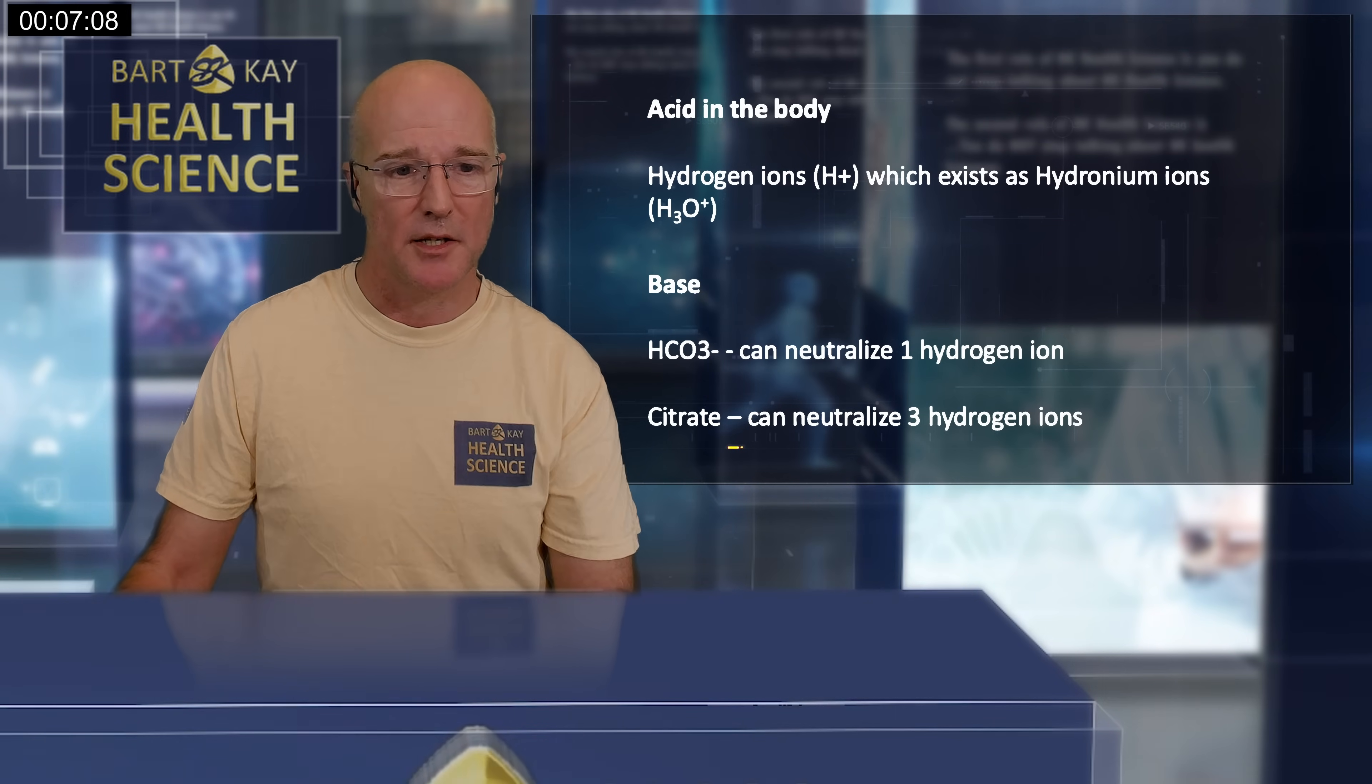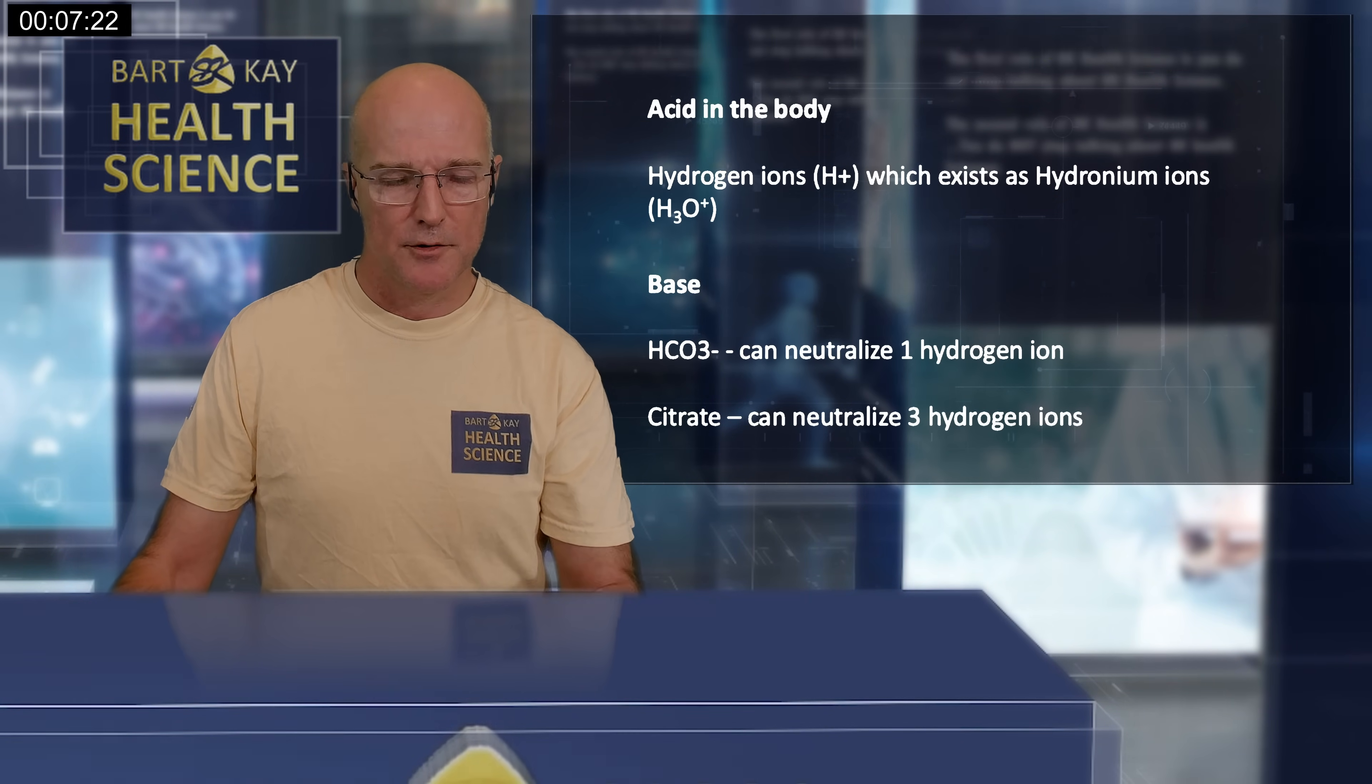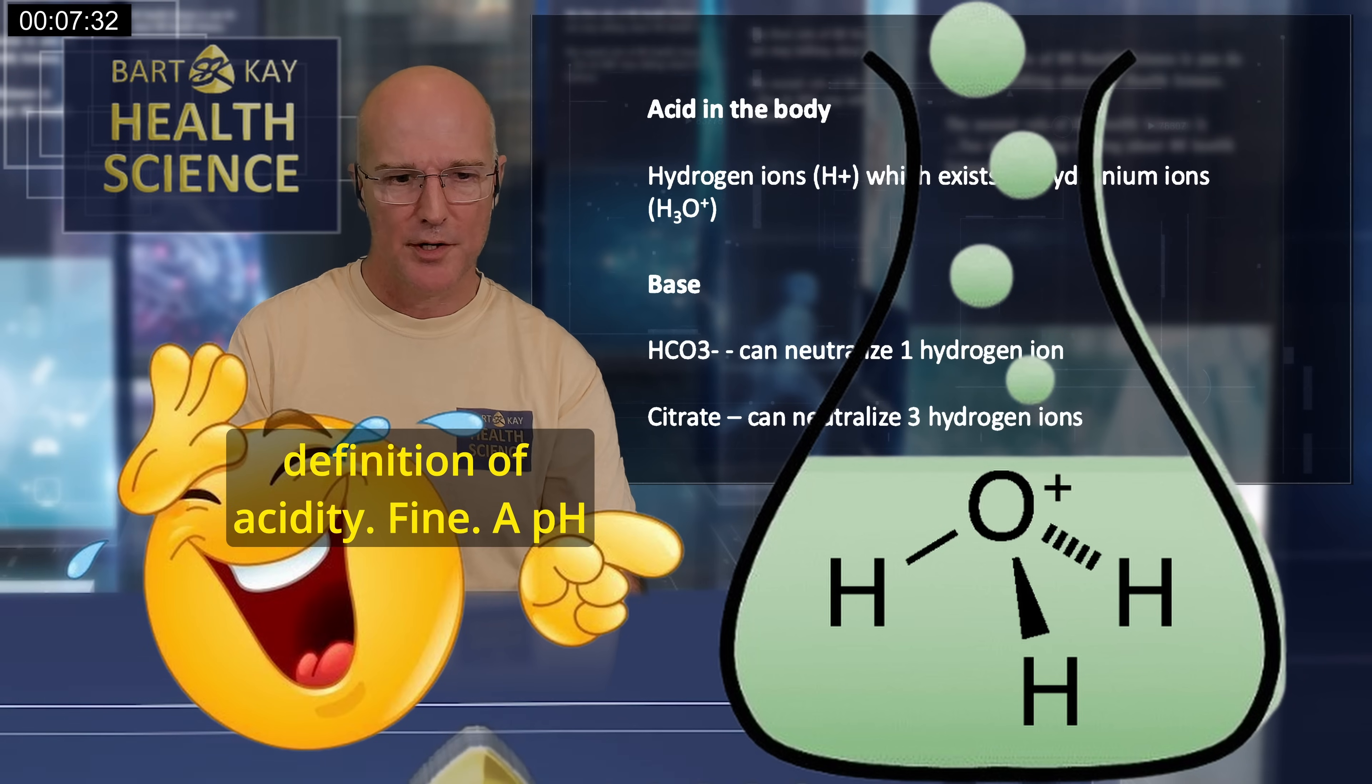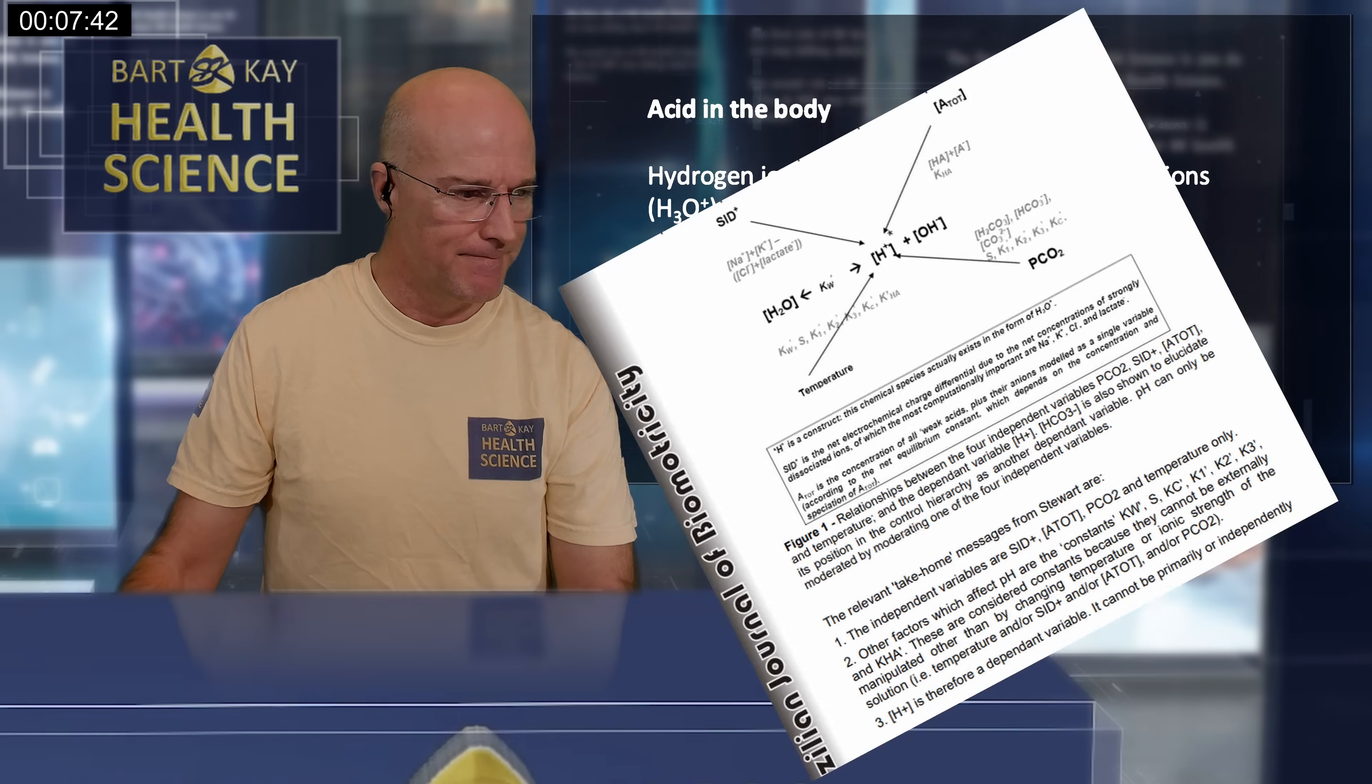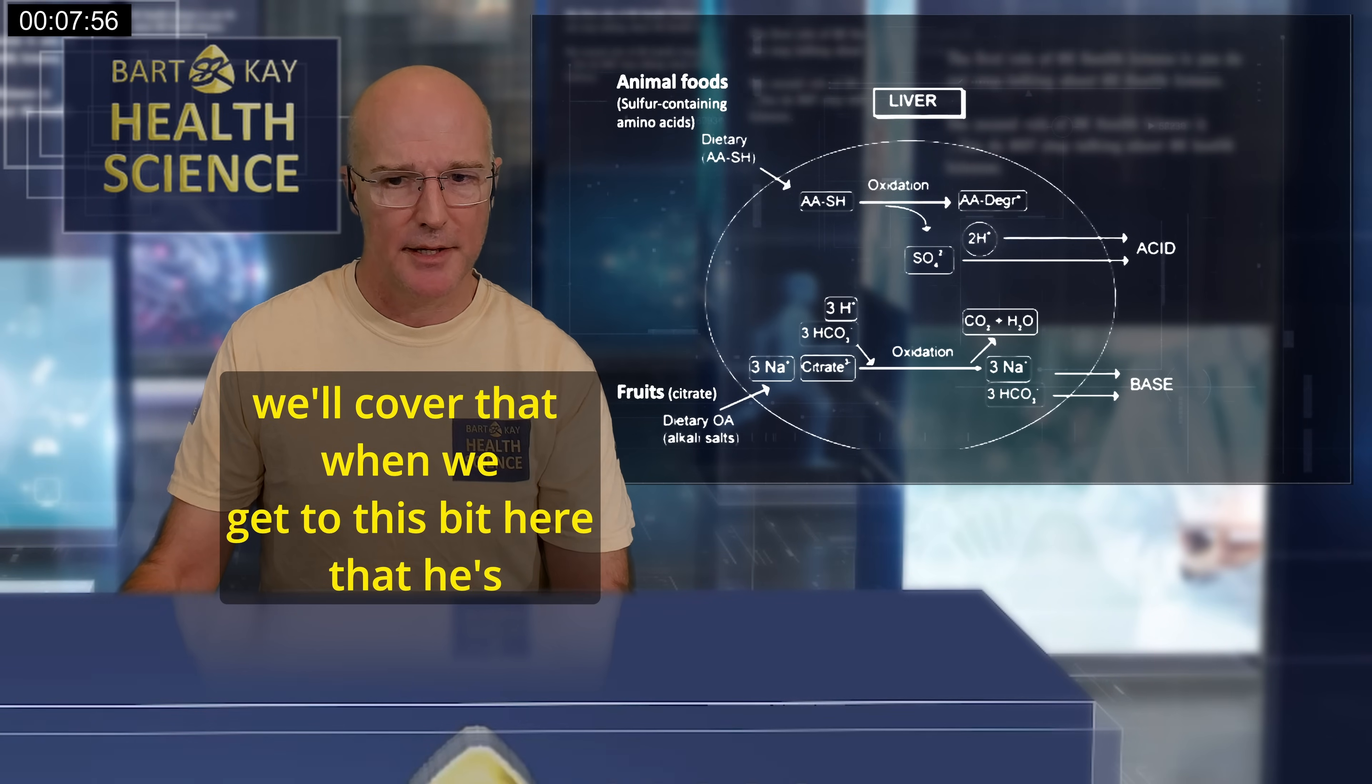So what is acid in the body? Basically we call this hydrogen ions, which actually exists in an aqueous solution as hydronium ions. Okay, so James has operationally defined acid as the hydronium ion concentration. That's actually acidity, not acid, but okay, that's his operational definition of acidity. Fine. A pH concentration. Well James, pH is a dependent variable still. Oops. H3O+. The base is bicarbonate, which can neutralize one hydrogen ion, and citrate is the other base which can neutralize three hydrogen ions. Not so at all, completely false in fact.